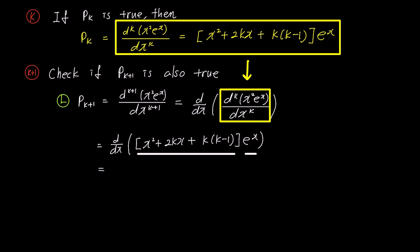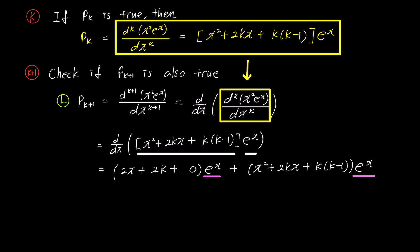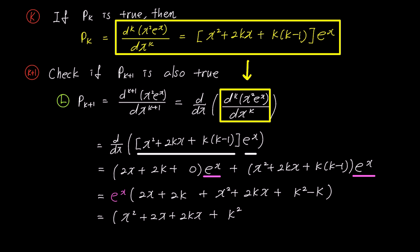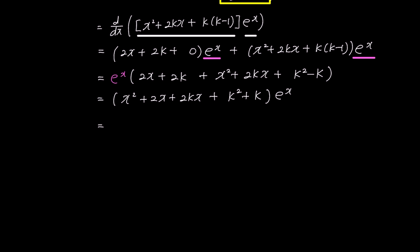Using the product rule, this simplifies to (2x plus 2k plus 0) times e to the power of x plus (x squared plus 2kx plus k times (k minus 1)) times e to the power of x. Factoring out the common factor e to the power of x, we get e to the power of x times (2x plus 2k plus x squared plus 2kx plus k squared minus k). Simplifying and rearranging, we have (x squared plus 2x plus 2kx plus k squared plus k) times e to the power of x. Further factoring, the expression becomes (x squared plus 2x(k plus 1) plus k(k plus 1)) times e to the power of x.